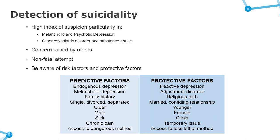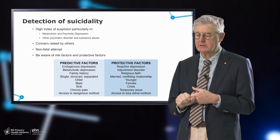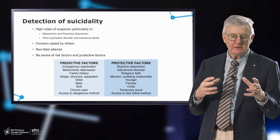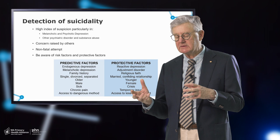Finally, detection of suicidality. The detection of suicidality involves a high index of suspicion in the first place. You'll be on to it if you're dealing with someone who you think has melancholic or psychotic depression. If they have other psychiatric comorbidities, or a family history of bipolarity or schizophrenia or other serious illnesses, it's entirely reasonable to consider that these things aggravate the potential for suicidality.